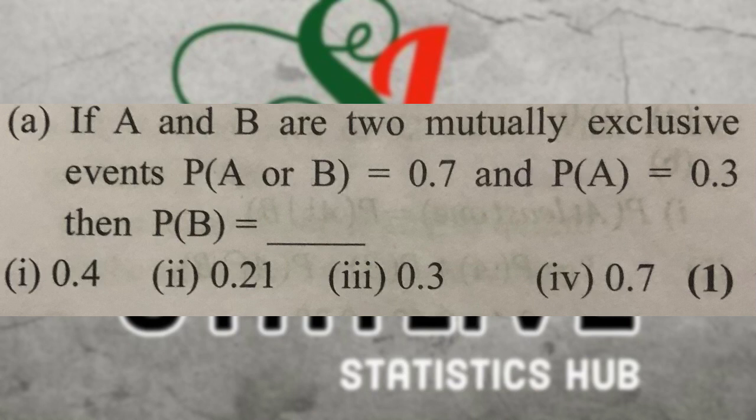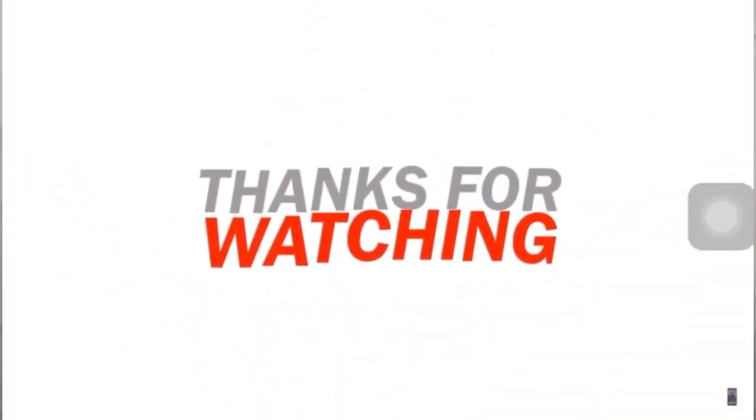If A and B are two mutually exclusive events, P of A or B equals 0.7 and P of A equals 0.3, then P of B equals 0.4. This covers the limitations and applications of the addition theorem for mutually exclusive events.